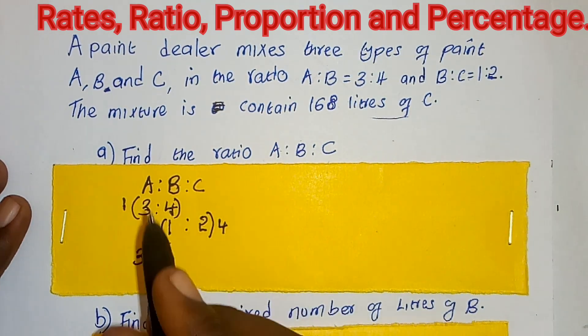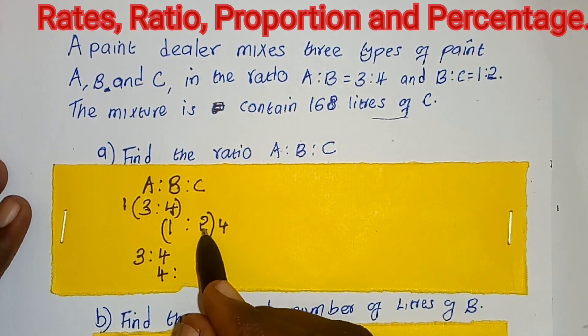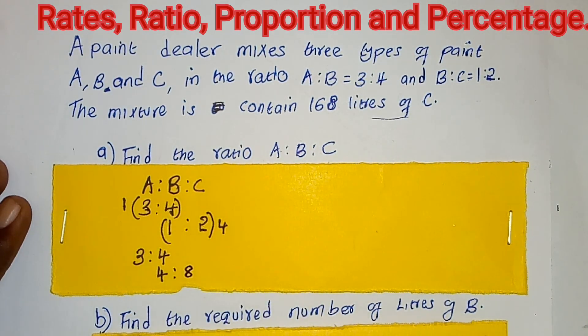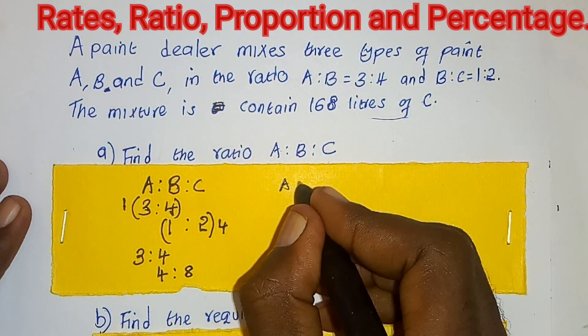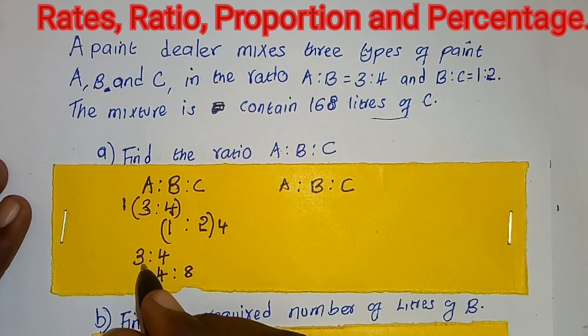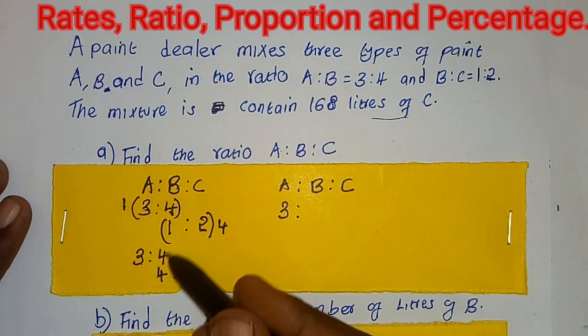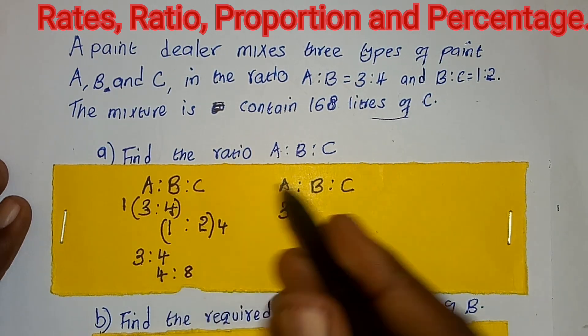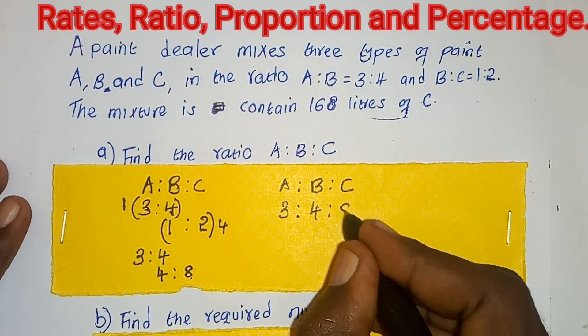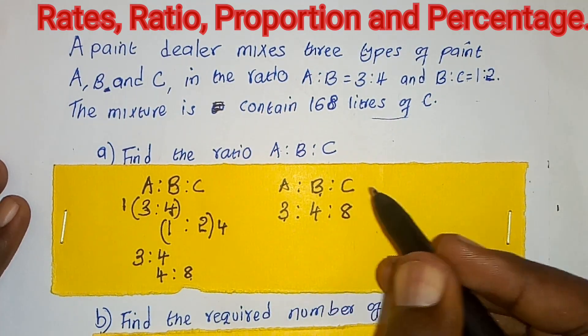Then the lower part, 4 times 1, we get 4 is to 4 times 2, we get 8. Therefore, our ratio A is to B is to C is 3 is to the value of B is 4, and the value of C is 8. And therefore, that's the ratio of A is to B is to C.